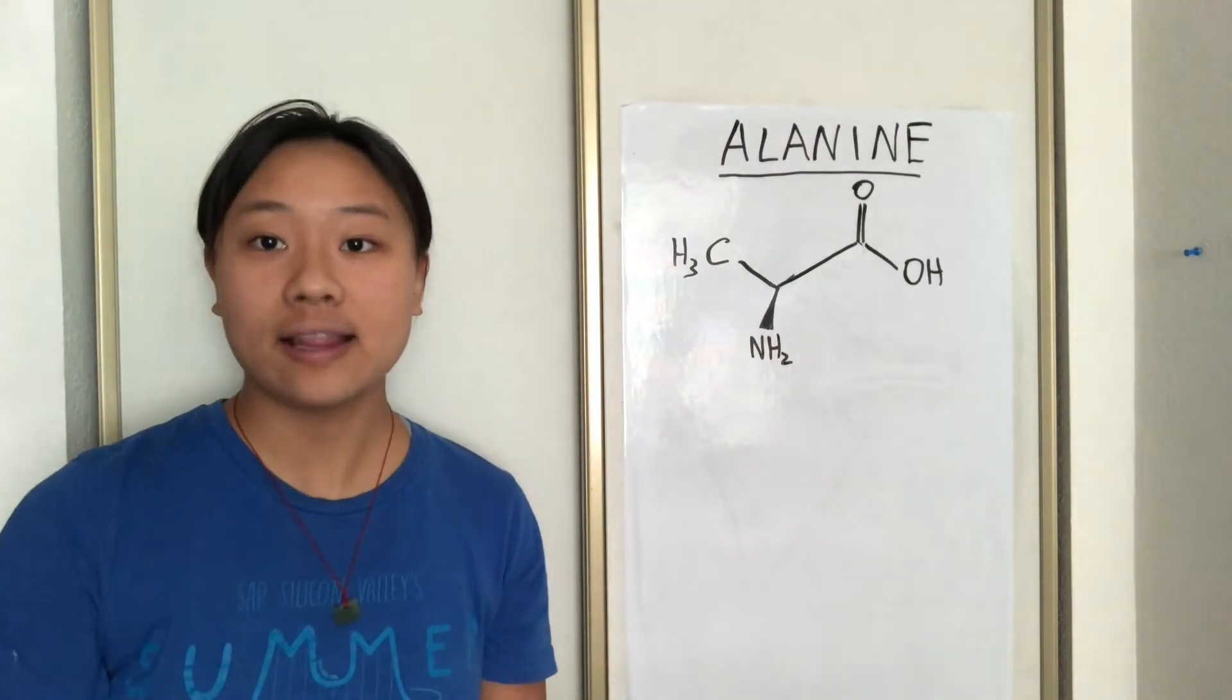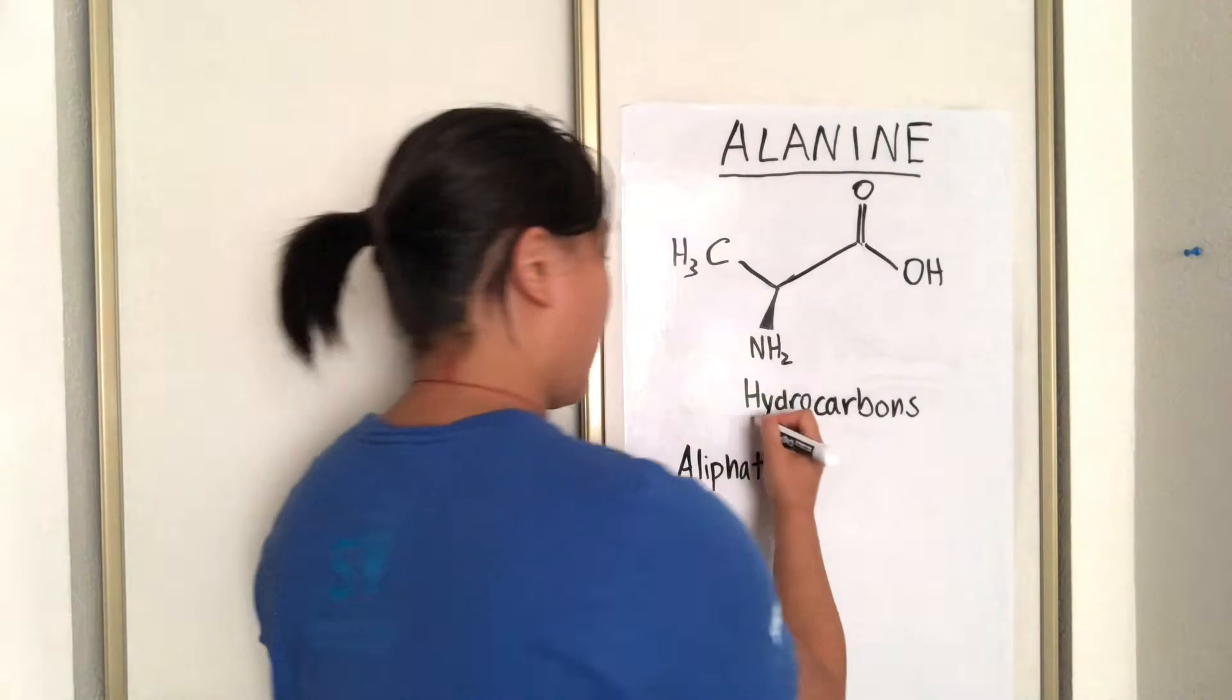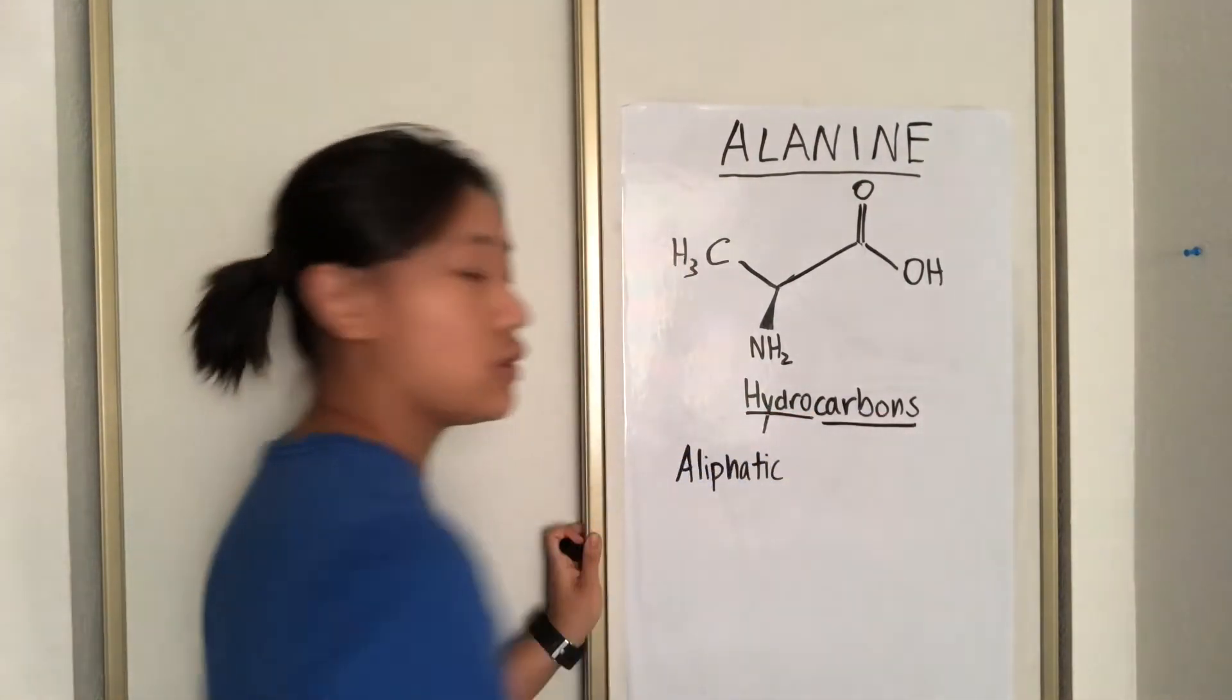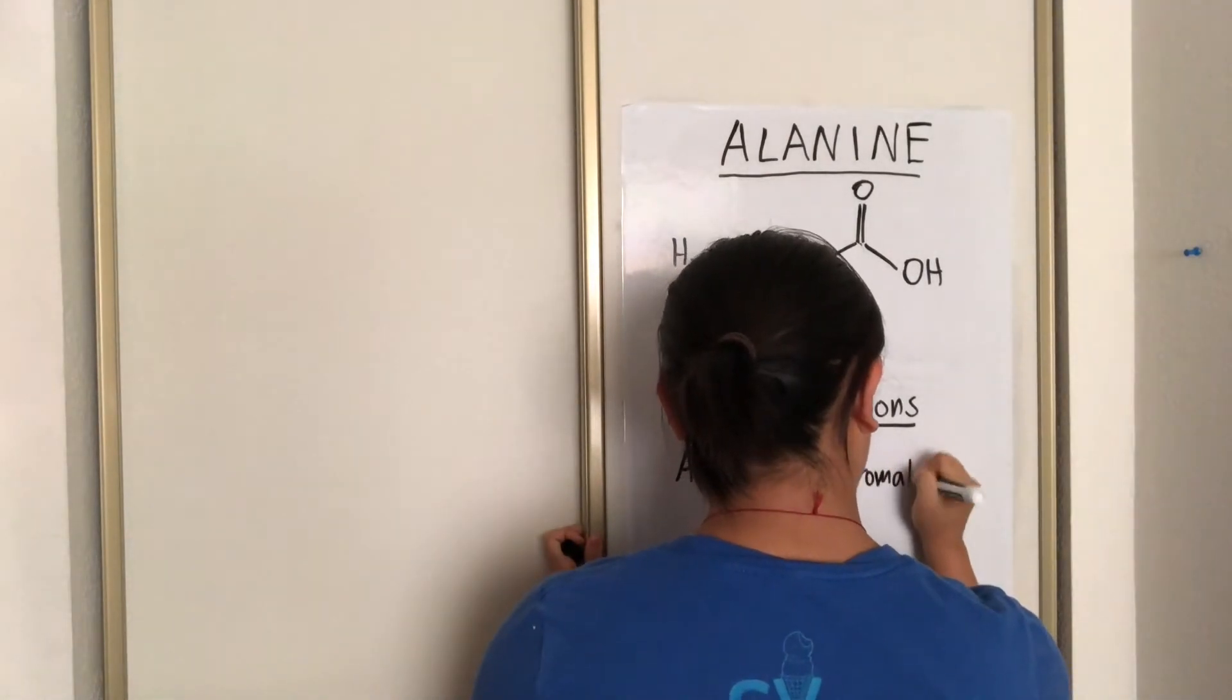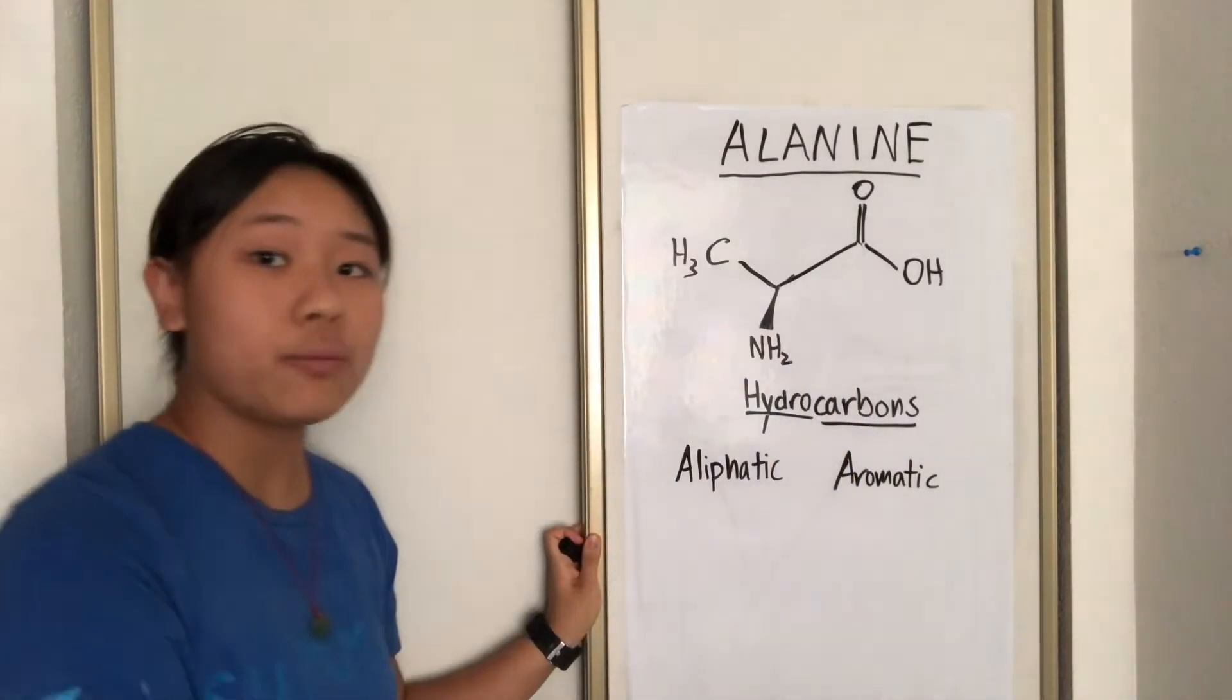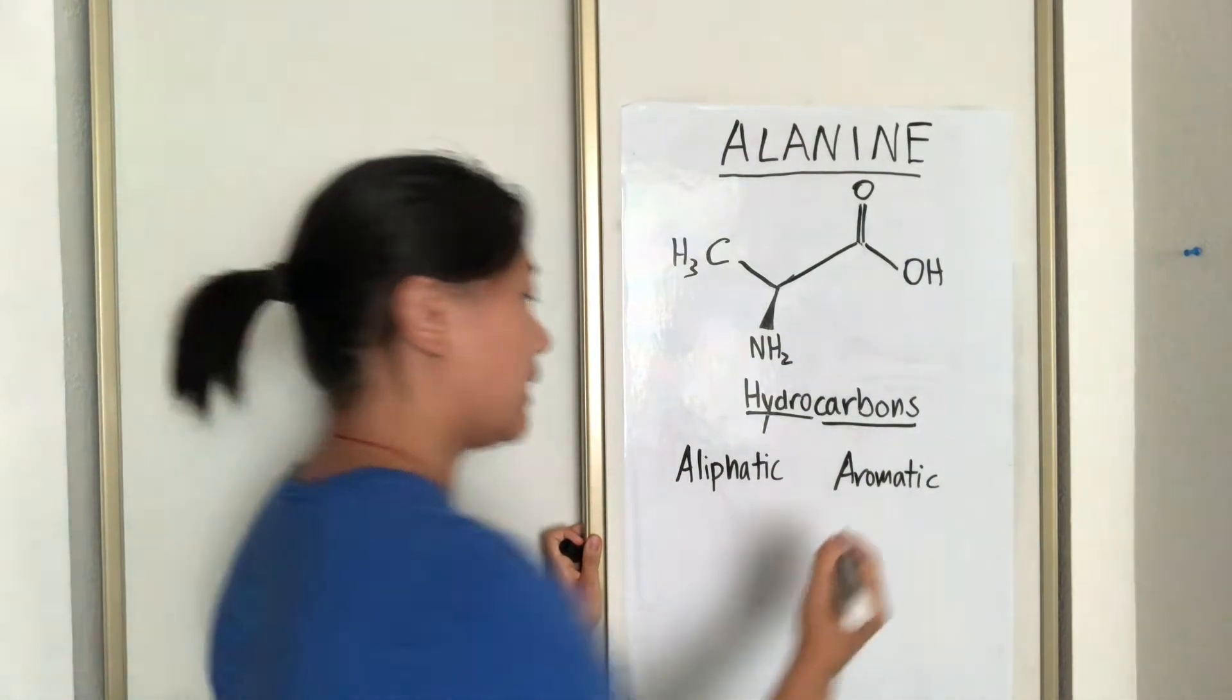Now alanine is classified as aliphatic. What's that you say? Well, all hydrocarbons, meaning that they are made of hydrogens and carbons, are split into either aliphatic or aromatic groups. Aromatic being the ones we mentioned before, they contain stable rings.